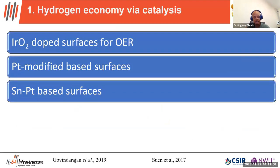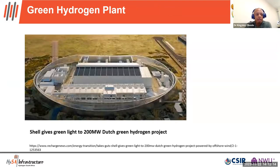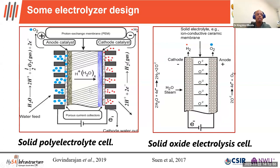In the hydrogen economy and catalysis area, we look at iridium-doped surfaces for OER — the oxygen evolution reaction — and discuss modifying platinum-based surfaces by introducing tin. A recent project was given a green light by Shell to build a 200-megawatt green hydrogen plant, which will use large electrolyzer systems. These electrolyzers split water into oxygen and hydrogen, with the energy coming from renewable sources such as wind farms.